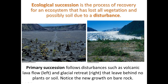Primary succession is when you lose both the vegetation and the soil it was growing in. This can follow disturbances such as volcanic lava flow on the left and glacial retreat on the right that leave behind no plants or soil. Notice the new growth on the bare rock — this is all bare rock and we're starting to get some new growth here. We're also getting new growth on what was basically very minimal, if any, soil left behind by this retreating glacier.